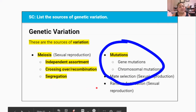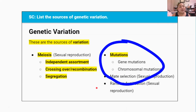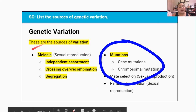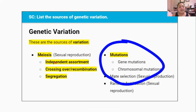In the previous video, video 2, about genes and genetic variation, you learned that there are two major sources of genetic variation. The first being meiosis and sexual reproduction, and the other being mutations. In this lesson we're going to be focusing on the second source of variation: mutations in genes and chromosomes.